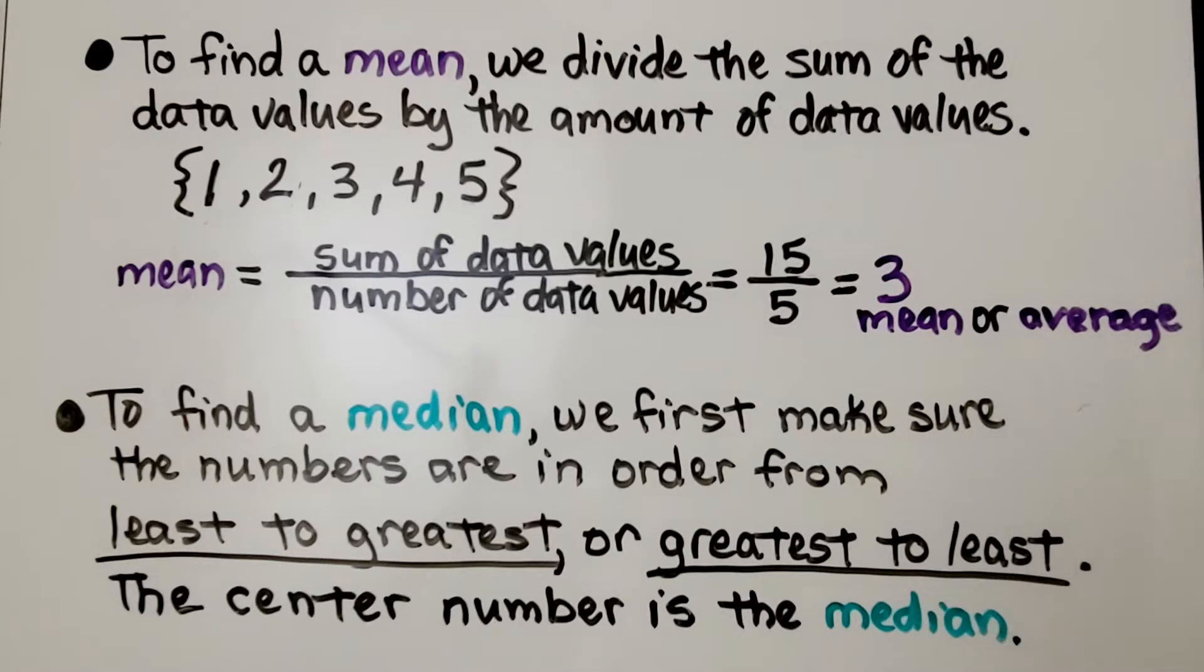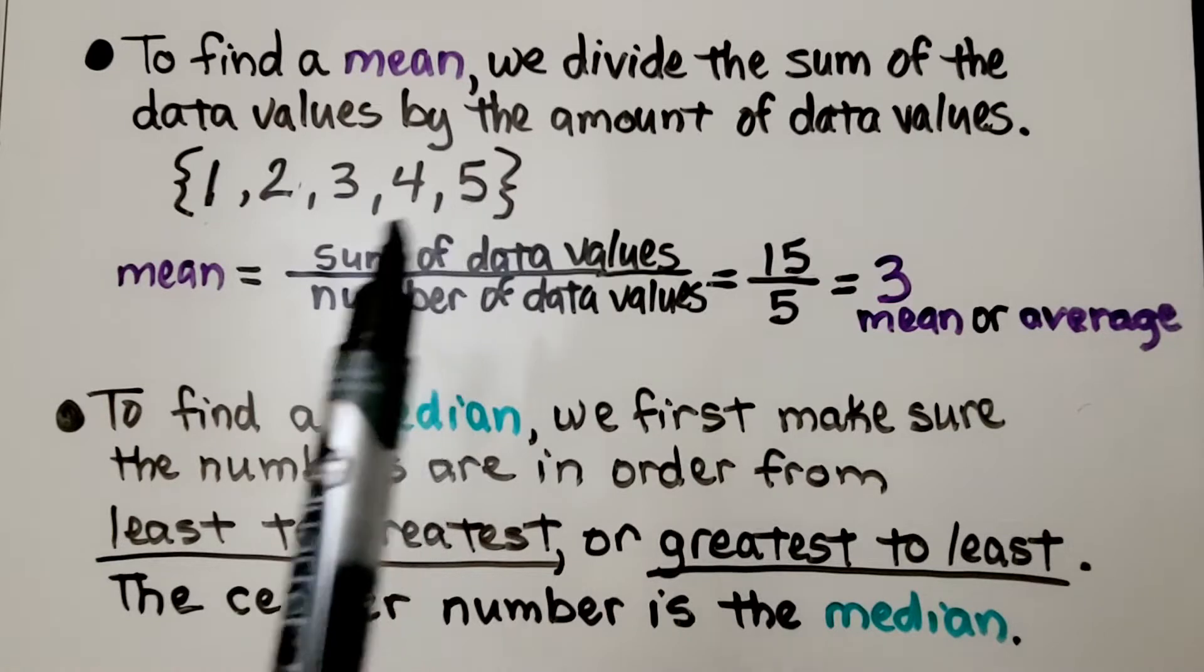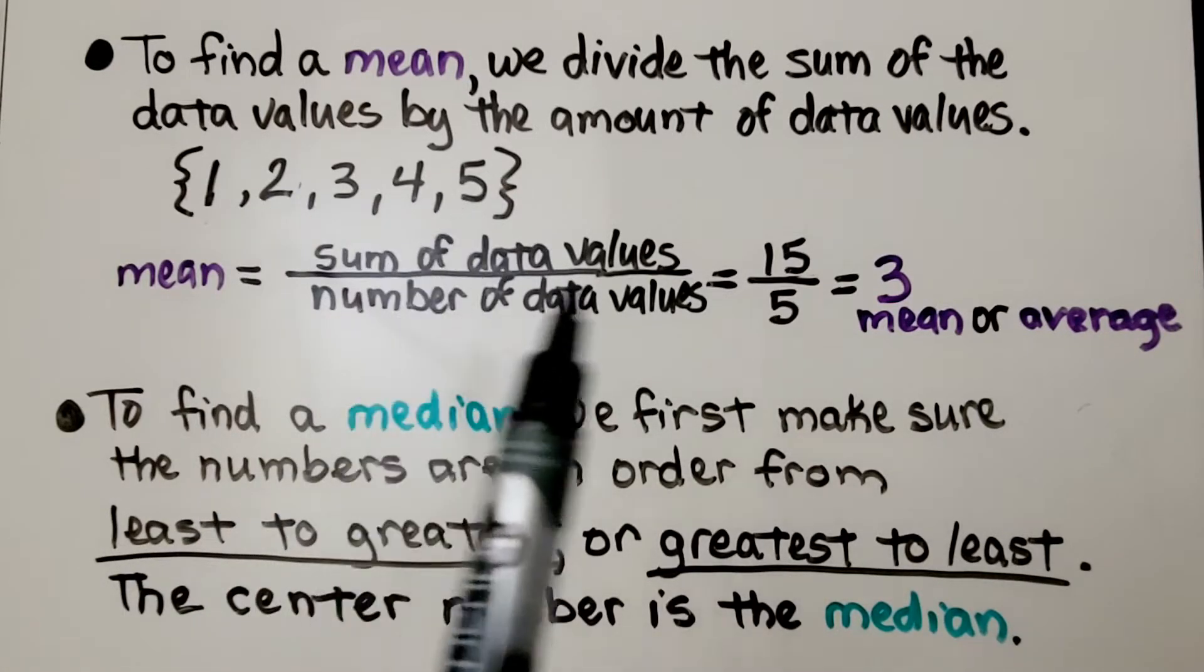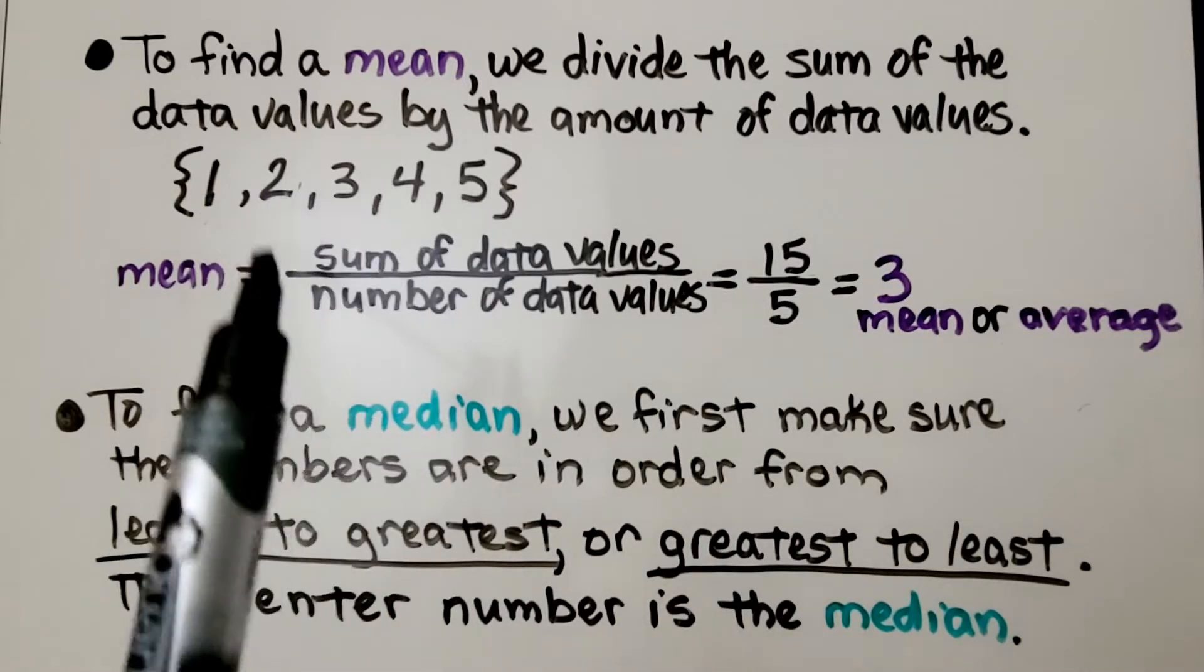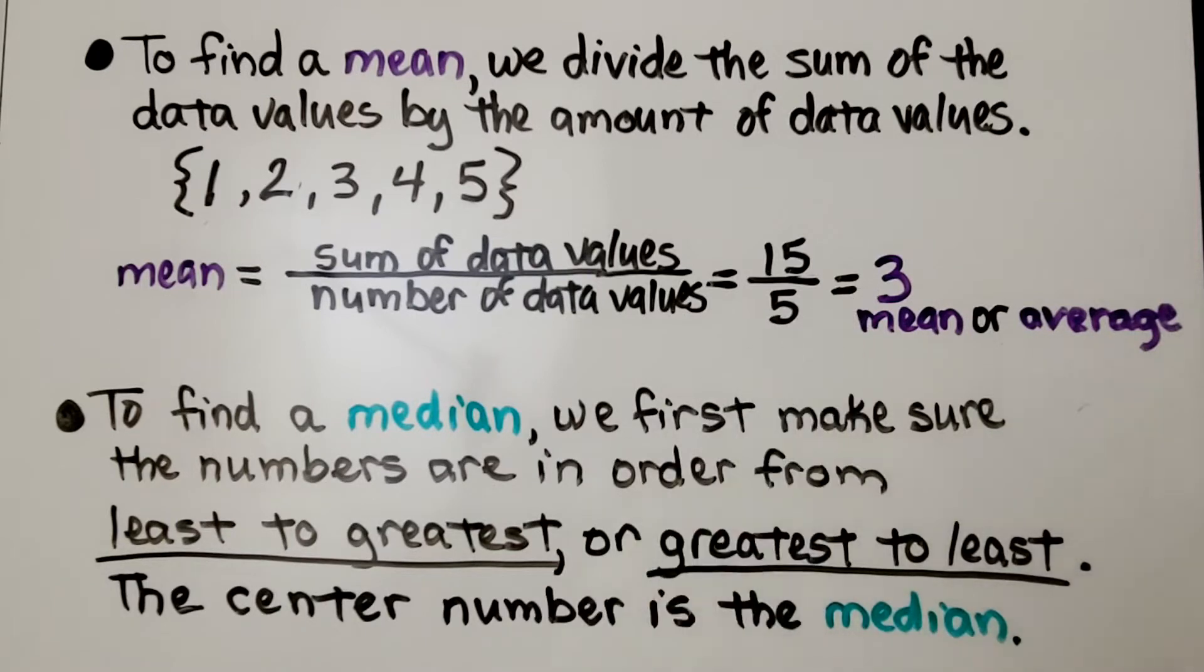So for a quick review, to find a mean, we divide the sum of the data values by the amount of data values. If the data values are 1, 2, 3, 4, 5, we add them up: 1 plus 2 plus 3 plus 4 plus 5, we get 15. There are 5 numbers in the set, we divide the 15 by that 5, and 3 would be our mean or average.